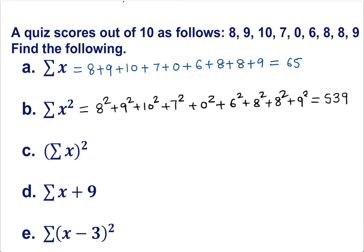Remember, you square all of them and at the end you add. So that is going to give you 539. On the top you write down 65, and this is 539.